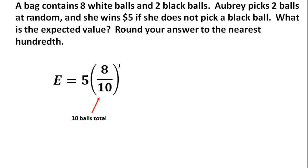10 balls total, 8 tenths. So 5 times 8 tenths will be the expected value if she only picked one ball and it was not black. But on this one, she's got to pick two different ones. So if she chooses the first one, her probability was 8 tenths. If she chooses that one, she's going to hold on to that. She's not going to put it back. It doesn't make sense to. She's already picked a winner.